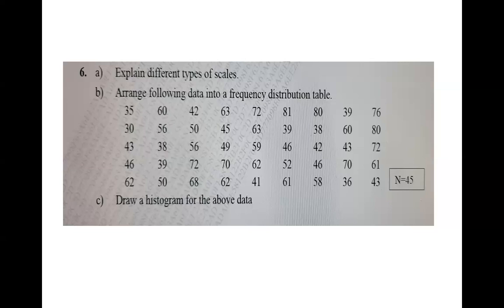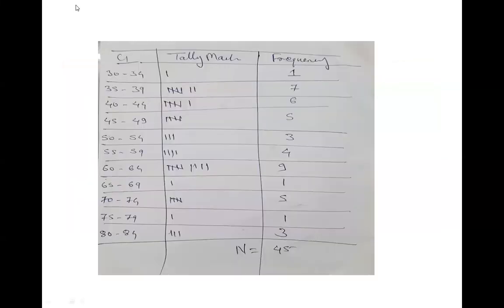So in that case, to make the frequency distribution, you have to arrange data in groups. This is called a class interval - the group which you are going to make is called a class interval. You can keep the distance of five digits, seven digits, or ten digits - it is up to you. Here, to teach you, I have kept a distance of five digits.